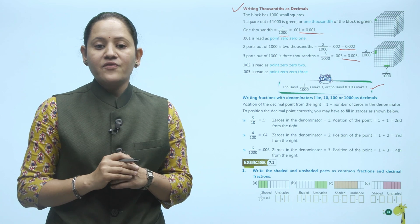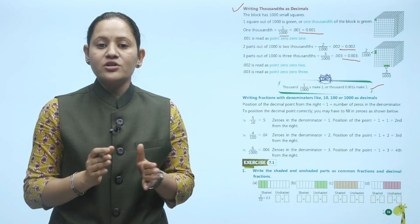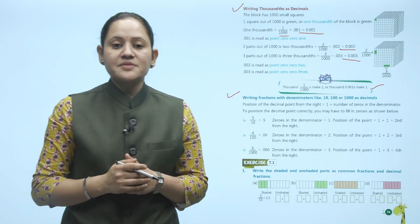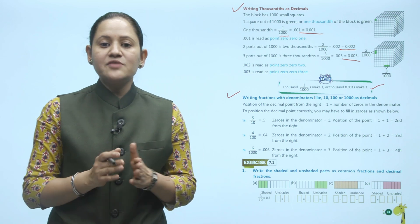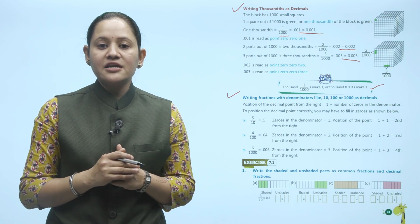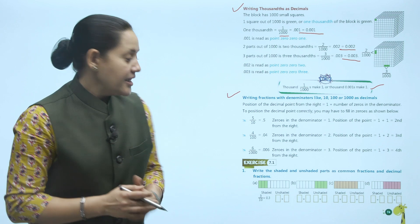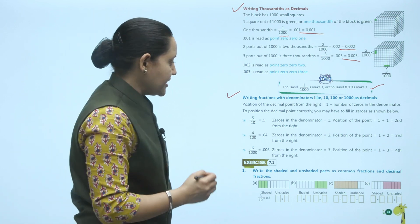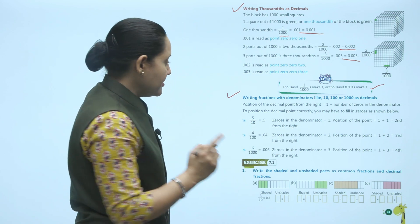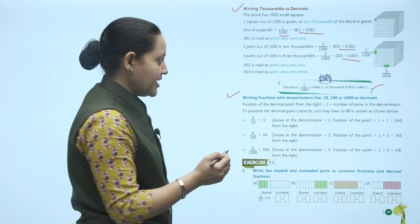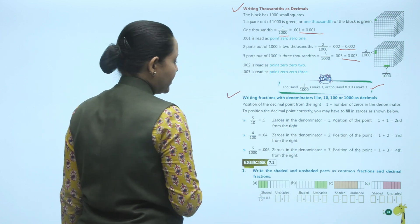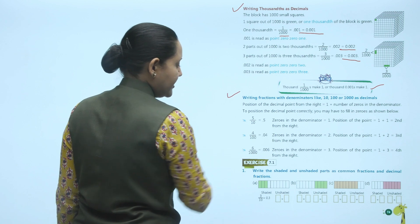Next is writing fractions with denominators like 10, 100, or 1000 as decimals. The position of the decimal point from the right equals 1 plus the number of zeros in the denominator. For example, 5 upon 10 is written as 0.5. There is one zero in the denominator, so the decimal position is 1 plus 1 equals 2 from the right — first the digit, then the decimal.